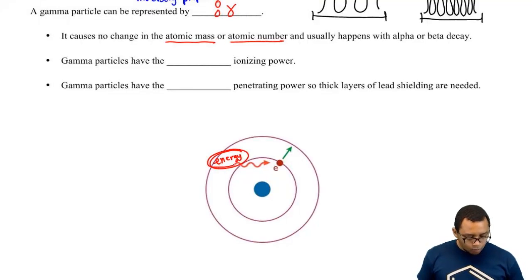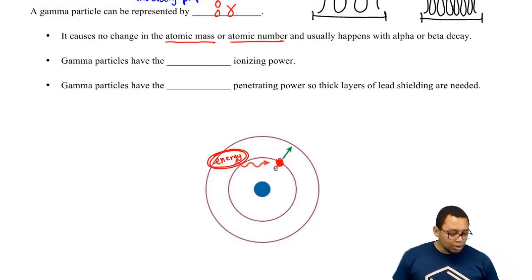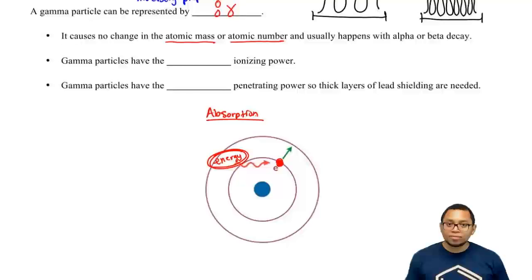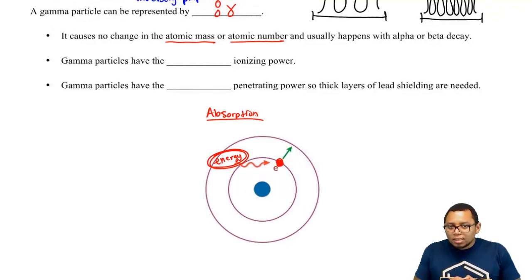This wavy line represents energy, and this electron is in the first shell of the atom. In absorption, the electron absorbs that excess energy, becomes excited, and uses that energy to jump up to either a higher shell number or a higher orbital number.